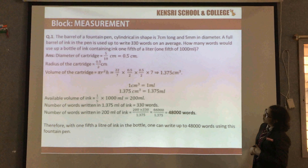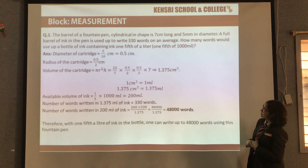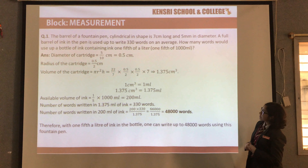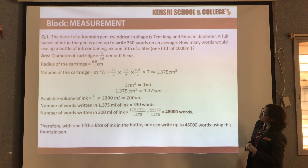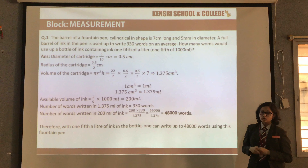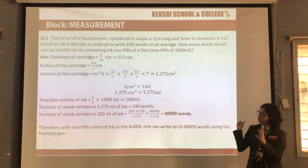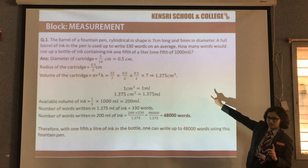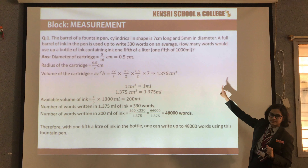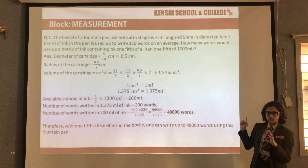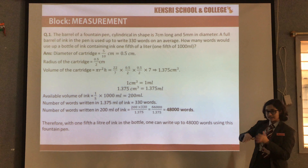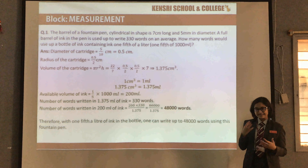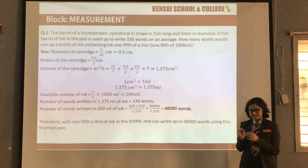Next we move to the measurement question. The barrel of a fountain pen, cylindrical in shape, is 7 cm long and 5 mm in diameter. A full barrel of ink is used to write 330 words on average. How many words would use up a bottle of ink containing one-fifth of a litre? We find the volume of each cartridge using the formula πr²h and get 1.375 cm³. Since 1 cm³ equals 1 ml, each cartridge holds 1.375 ml of ink, allowing a person to write 330 words.